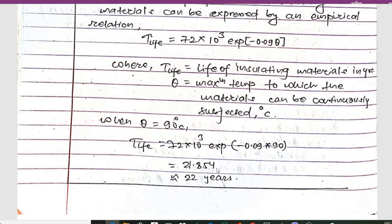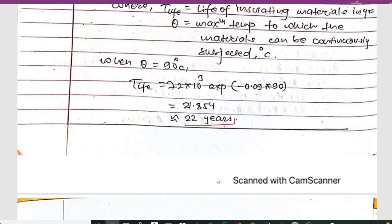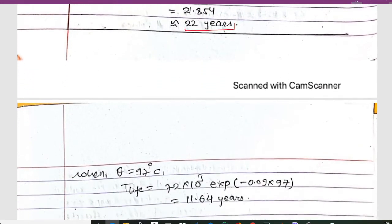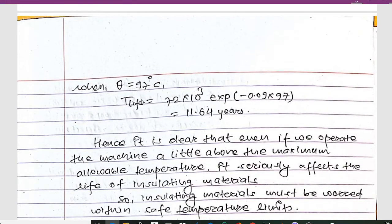For 97 degrees, that is going to give 11.64 years.